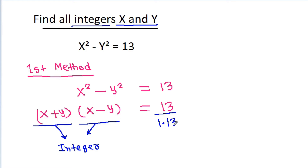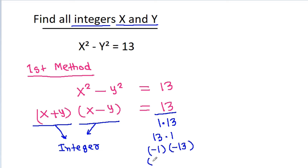The factor pairs of 13 are: 1 times 13, 13 times 1, negative 1 times negative 13, and negative 13 times negative 1.